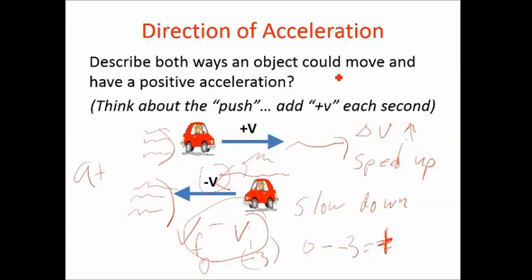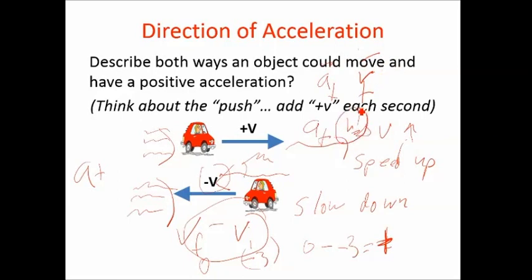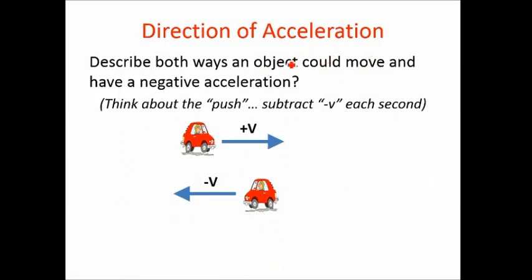So here's the handy rule: if the signs of acceleration and velocity are the same — both positive or both negative — you're going to speed up. If acceleration is negative and velocity is negative, you speed up. If acceleration is one way and velocity is the other — say, going backwards with forward acceleration — you're going to slow down.